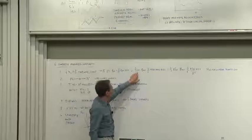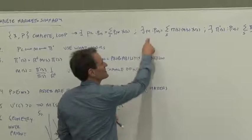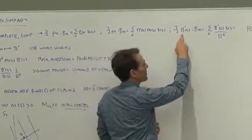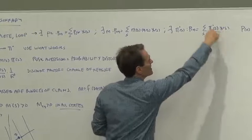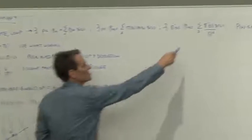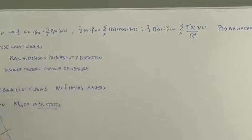There's a discount factor such that price is the expected discounted payoff and there's a set of risk neutral probabilities such the price is the expected payoff divided by the risk free rate evaluated at those distorted risk neutral probabilities.